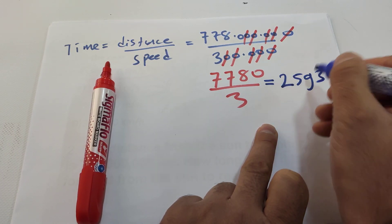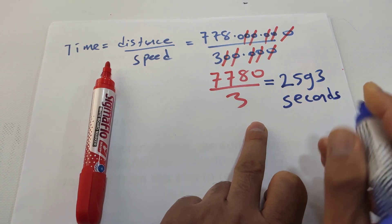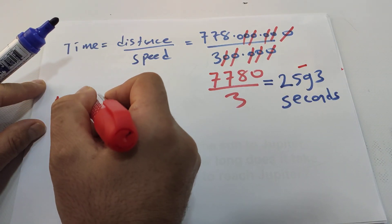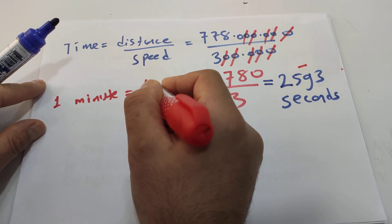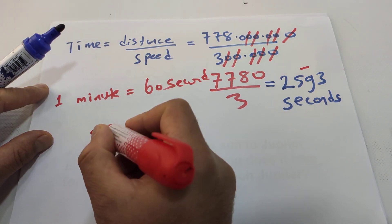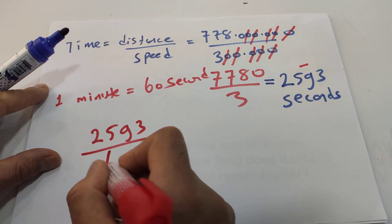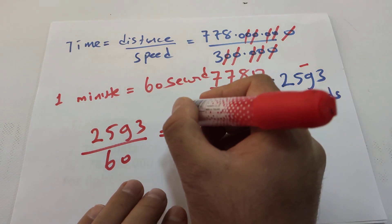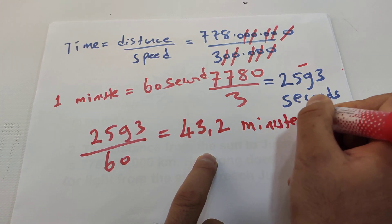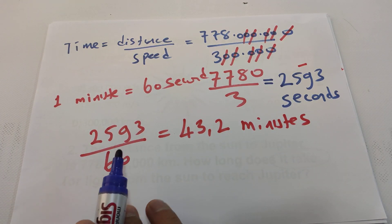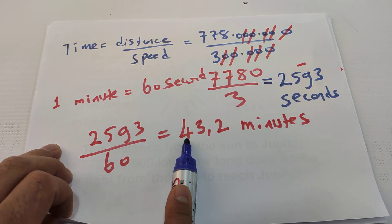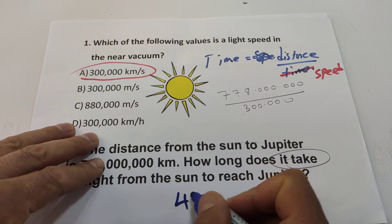So the answer is 2,593 seconds. Let us convert this into minutes. As you know, one minute equals 60 seconds. If we divide 2,593 by 60, we get approximately 43 minutes. So the light reaches from the sun to Jupiter in almost 43 minutes.